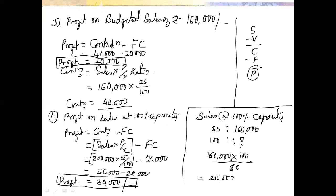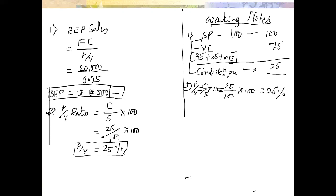I hope everybody understood. If you have any doubts, feel free to ask in the comment box. Do comment on this problem — it is very easy and carries 15 marks. You need to be good in the marginal costing statement. BEP calculation always requires fixed cost divided by PV ratio. PV ratio is contribution divided by sales into 100, or contribution per unit divided by selling price per unit into 100, expressed as a percentage. Thank you.